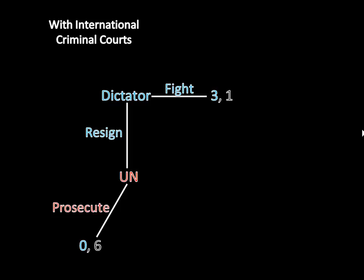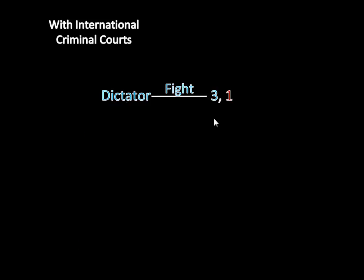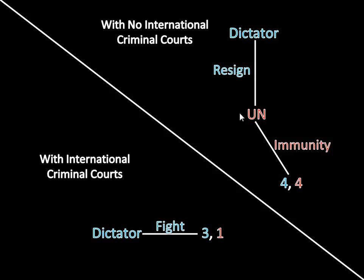The dictator is going to fight. With international courts, the dictator fights, getting a payoff of 3, and the United Nations gets a payoff of 1. The rub is that when we compare payoffs, the world is actually better for both players when international criminal courts don't exist. Without courts, the dictator resigns knowing he can't be prosecuted and gets 4; the United Nations also gets 4 because no war was fought. But with international courts, the dictator fights and gets 3, and the United Nations gets 1. Having international criminal courts actually reduces both players' payoffs.